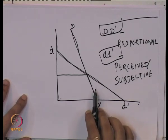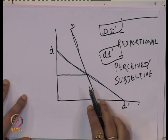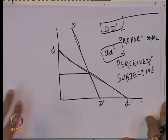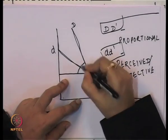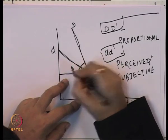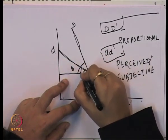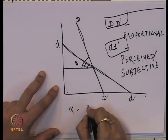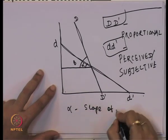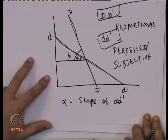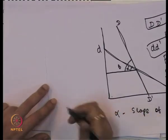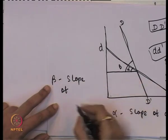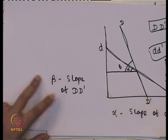The perceived demand curve is more elastic because since others are not following, any small change in the price of this firm generally affects the quantity demanded to a larger extent. We now define the two slopes. Alpha (α) is the slope of the perceived demand curve, and beta (β) is the slope of the proportional demand curve.